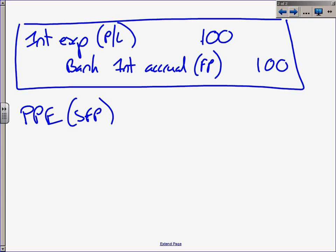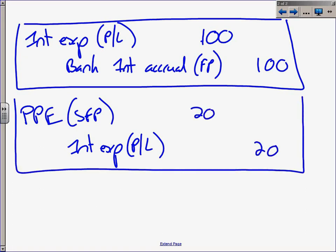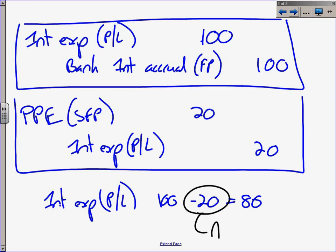The basic principle is that you will then go debit PPE in the statement of financial position and you will reduce this interest expense by a portion. Let's say you did that by 20. So the total interest expense in profit or loss will be 100 minus 20, which leaves us with 80, and the 20 that was capitalized will be added to property, plant, and equipment.